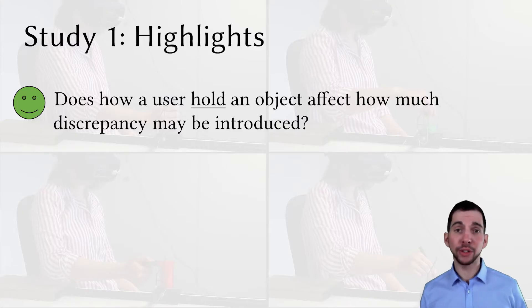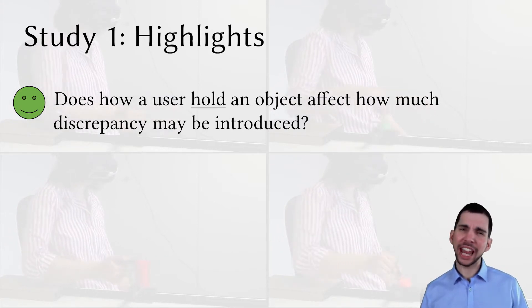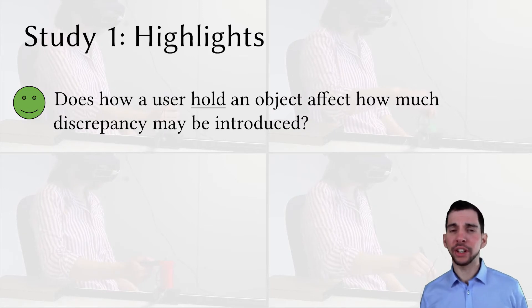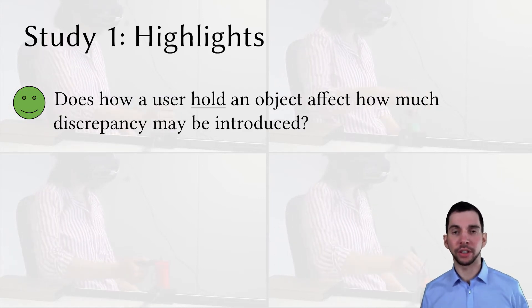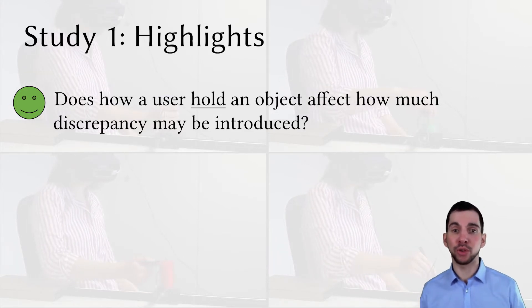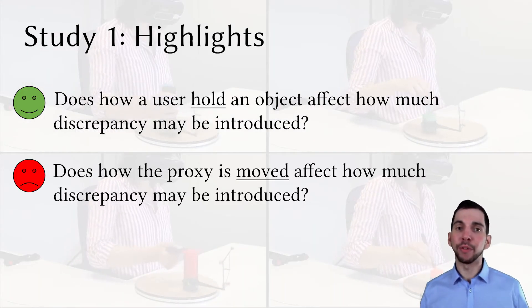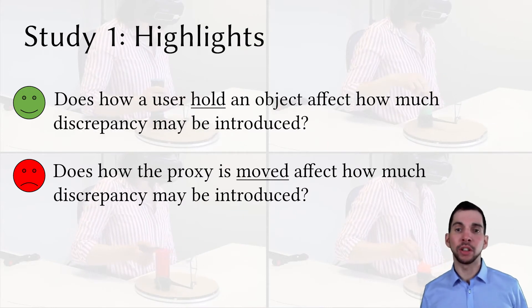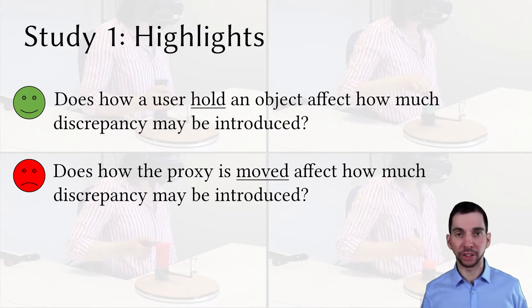Our results suggest that designers can use the same thresholds regardless of the grasping type, which is actually quite good news. Imagine if you would have to consider small changes in hand posture, which pretty much occur all the time. For instance, even quite simple interactions, such as opening a bottle, require seamless transitions between several hand postures. However, for the different movement trajectories, linear and circular, our results were inconclusive.